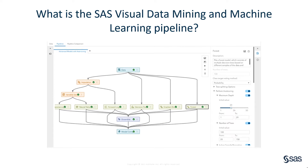In this pipeline, you can see that sequential steps were performed, such as imputing missing values and selecting important variables to use, followed by several candidate predictive models including an ensemble model. The last step is to compare all the models and determine the champion for these data from this pipeline.